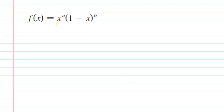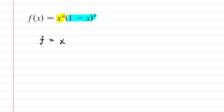What we actually have is the product of two functions. We have x to the power of a multiplied by 1 minus x to the power of b. Because we have a product of two functions, we need to use the product rule. In the product rule, you let f equal your first function, so f is equal to x to the power of a, and g is going to equal the second function, 1 minus x to the power of b.